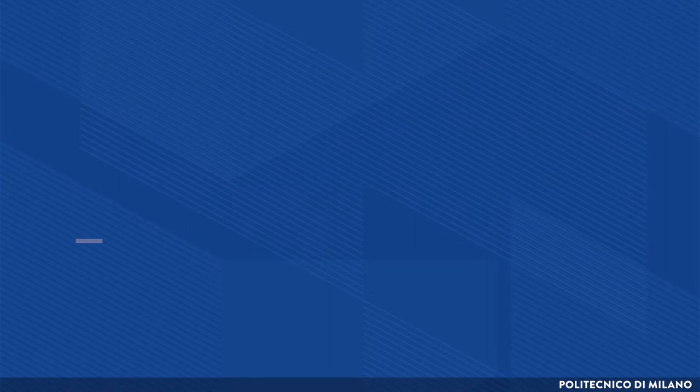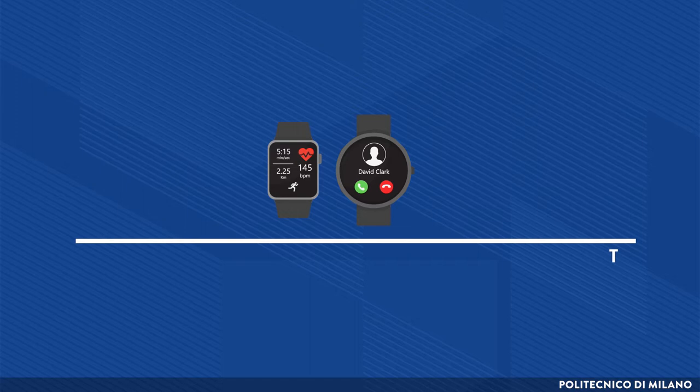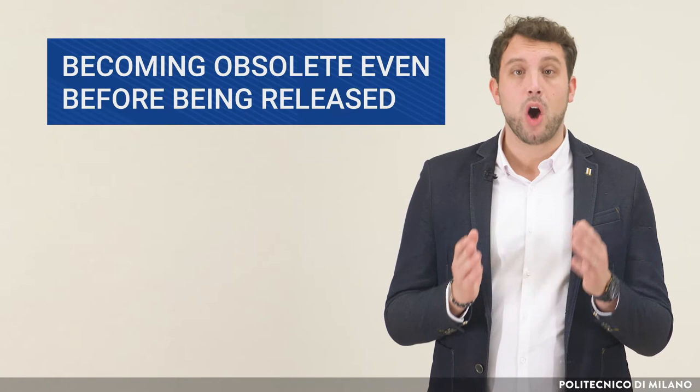For example, let's imagine developing a new product. In the middle of the development process, a competitor launches a product that incorporates a function you have not thought about. Alternatively, imagine that in the middle of the development process, a new technology allowing to connect all smart products is released, but your product is not compatible with it. In cases like this, the product you are developing could become obsolete even before being released.